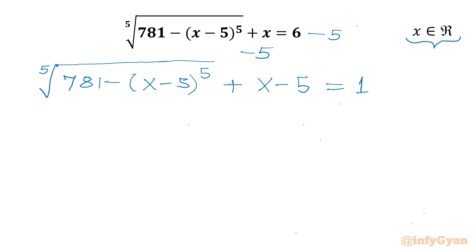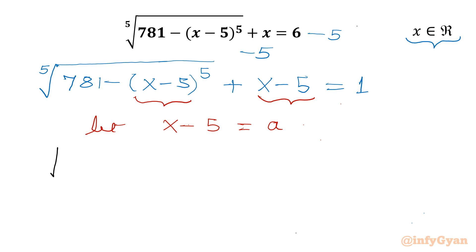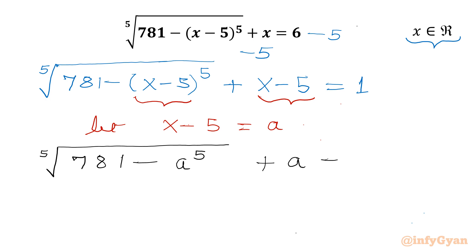Now x minus 5 is an obvious substitution. So let us consider x minus 5 equal to A. I will now write our equation in terms of A: 5th root of (781 minus A^5) plus A equals 1.